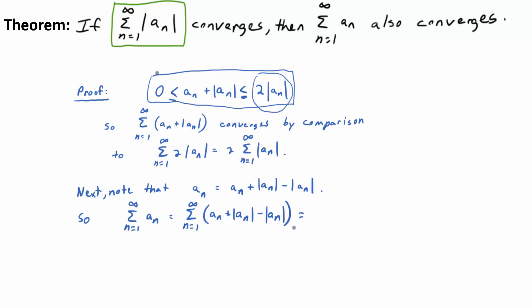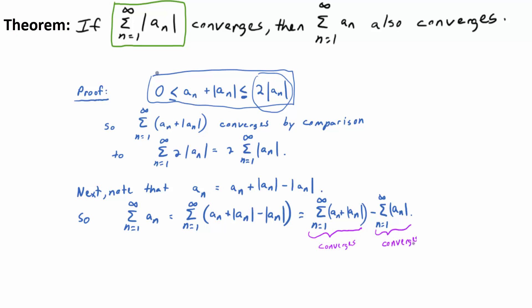We can split apart that series because the individual constituents converge. The sum of (aₙ + |aₙ|) — we know converges from the first part of the proof. The sum of |aₙ| — we know converges by assumption. So what do we know about the difference of two convergent series? It converges. Therefore the sum from n=1 to infinity of aₙ converges.